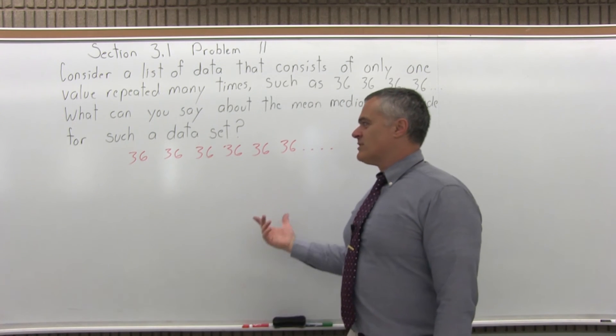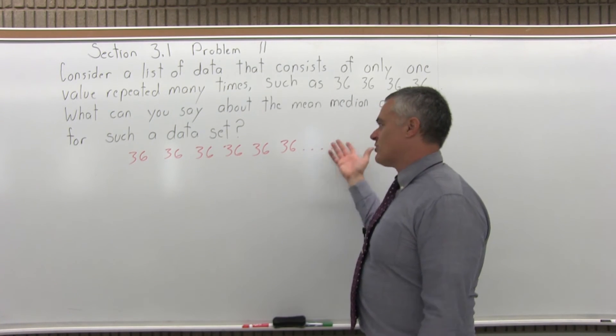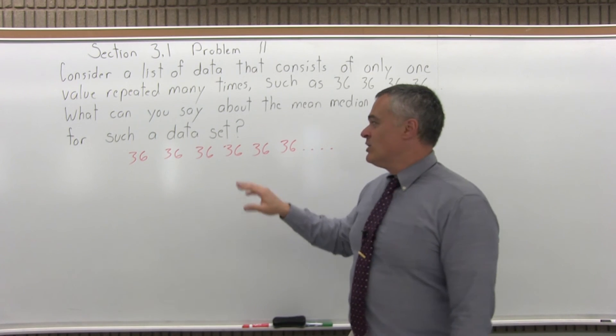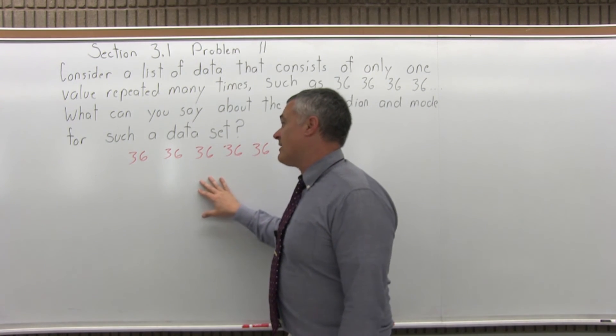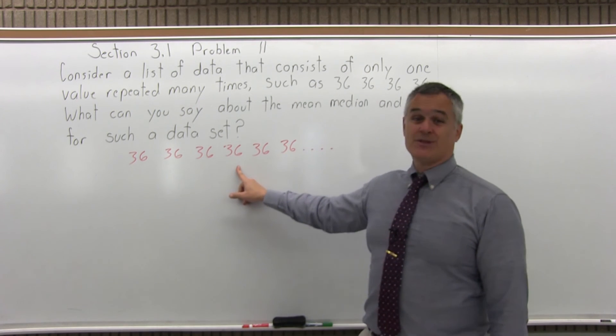And how about the average? Well, however many of the 36s you have, or whatever your repeated data value is, you're going to add them up, divide by how many you have, and guess what it comes out to? It comes out to that number.